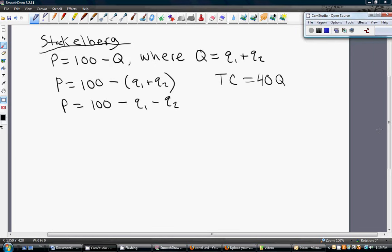We're going to look at how this model shakes out. We're going to use the same market conditions that we used in Cournot with an inverse demand of p equals 100 minus q, where that output is coming from firm 1 and firm 2.